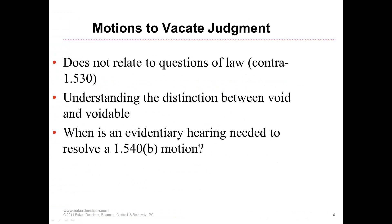If a party was never served, they can come forward at any time and say that — unless they've waived it by filing a pleading in the case prior. If you're attempting to go under B-5, while it's a broadly worded category of equitable relief, it's very narrowly interpreted and the court does not like to grant 1.540(b)(5) motions very often. You have to show that it wouldn't otherwise fall within any other category. Those situations would include where the judgment has been satisfied, or where the underlying judgment got vacated on appeal in a different instance.